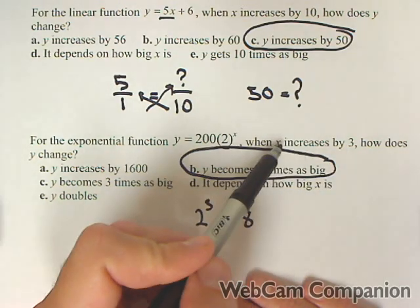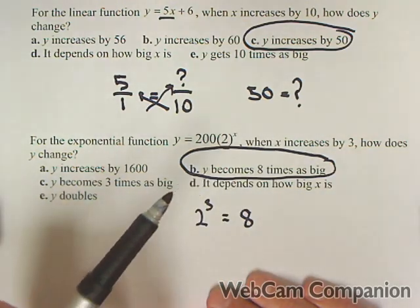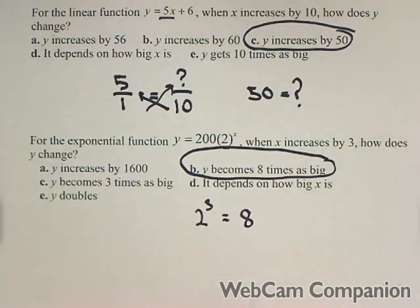If x had been increasing by 10, we'd have done two to the 10th. So kind of a nice display of the difference between the two types of growth.